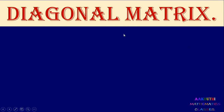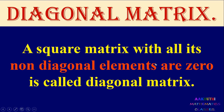Next type is diagonal matrix. A square matrix with all its non-diagonal elements equal to zero is called a diagonal matrix. The diagonal elements may be anything, but all non-diagonal elements must be zero.